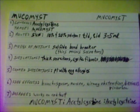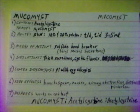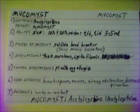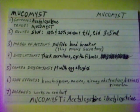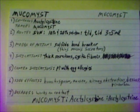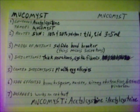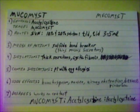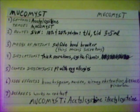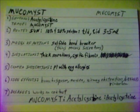Mucomyst. Generic name: acetylcysteine. Trade name: Mucomyst. Given by small volume nebulizer in a 10 or 20% solution of 3 to 5 mL, TID — 3 times daily — or QID — 4 times daily. Mode of action: a sulfide bond breaker which thins mucus secretions.